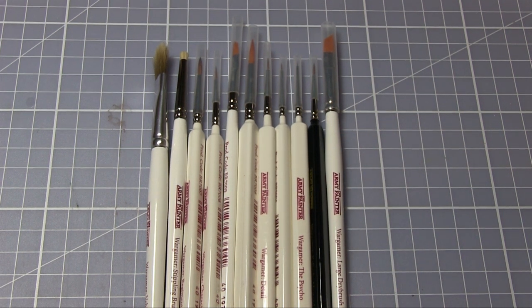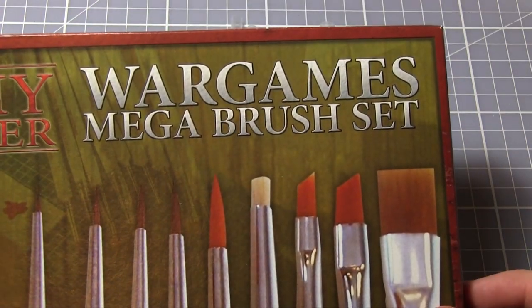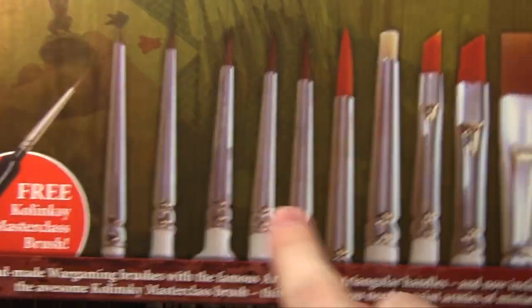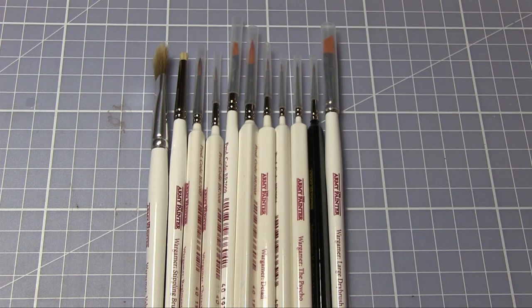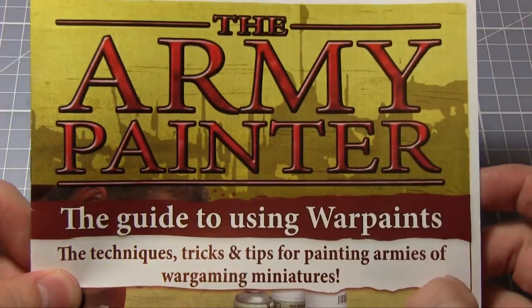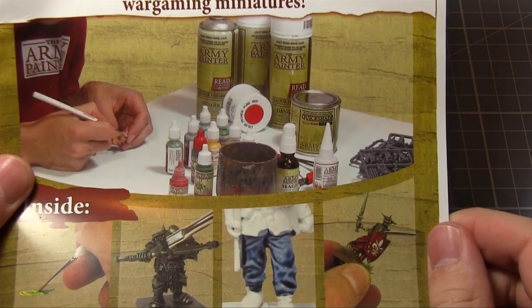All of these brushes are available separately, but you can find them all in this Wargames Mega Brush Set. This contains all of the brushes I've discussed today in this handy little box set. As well as the brushes, you also get a nice little how-to paint guide which has some quite handy tips in here.